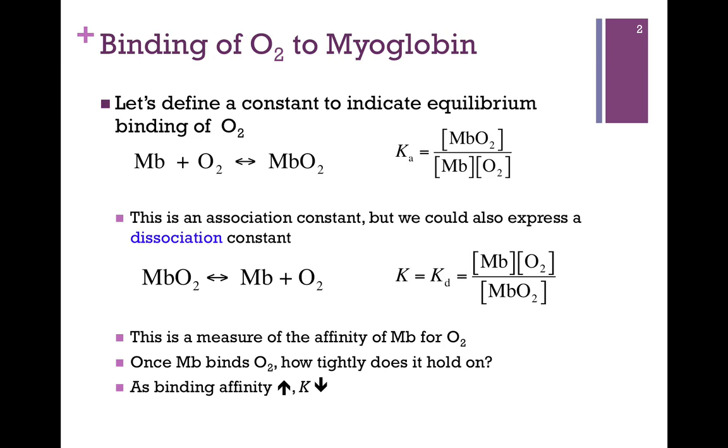First of all, we want to define a constant to indicate the equilibrium binding of oxygen. We have unbound myoglobin on the left. It's going to bind oxygen. Here's the bound form on the right, and so there's an equilibrium between the unbound and bound forms. Now we can come up with an expression for an equilibrium constant. This would be an association constant. Remember, it's always products over reactants. So this is the ratio of bound to unbound.